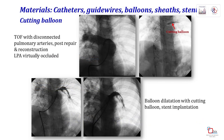This patient had previous extensive PA reconstruction at TOF repair due to discontinuous and hypoplastic left pulmonary artery. This shows the cutting balloon used for pre-dilation, the appearance following pre-dilation with the cutting balloon, and the final result following stent implantation.